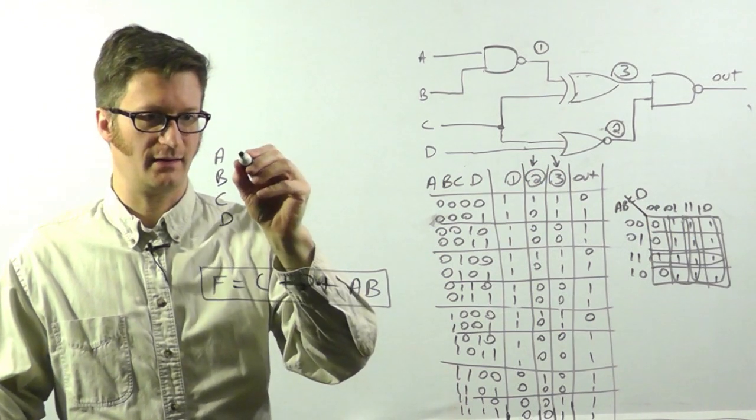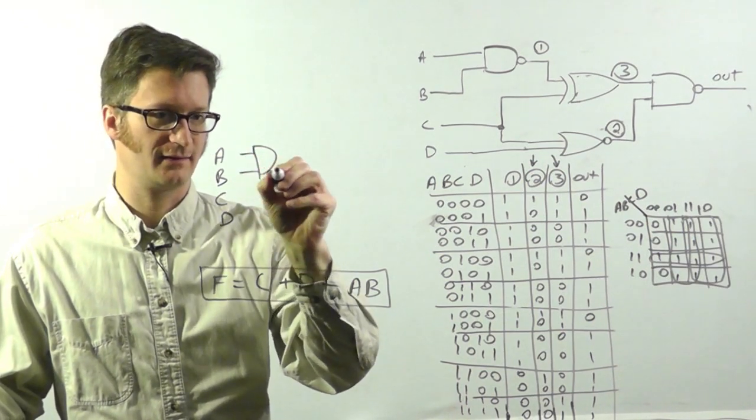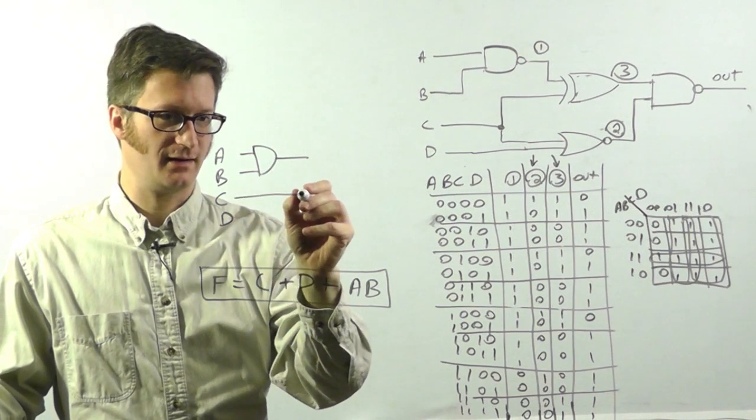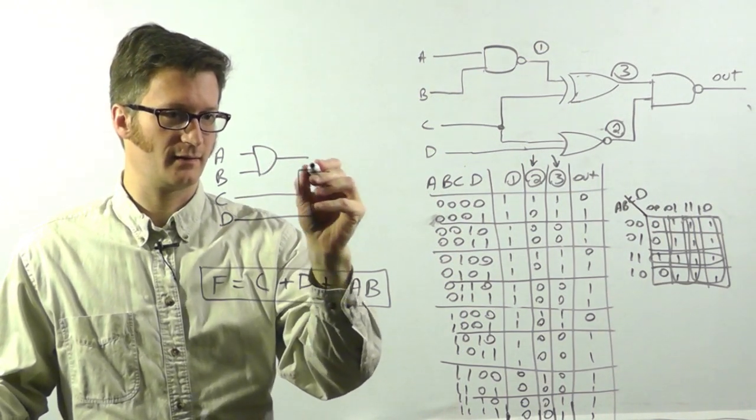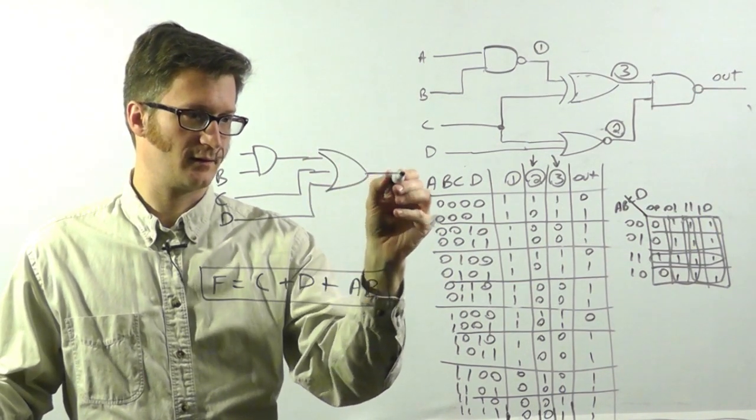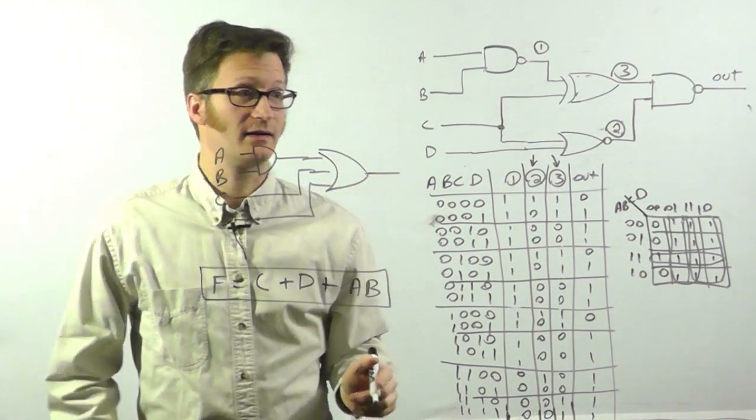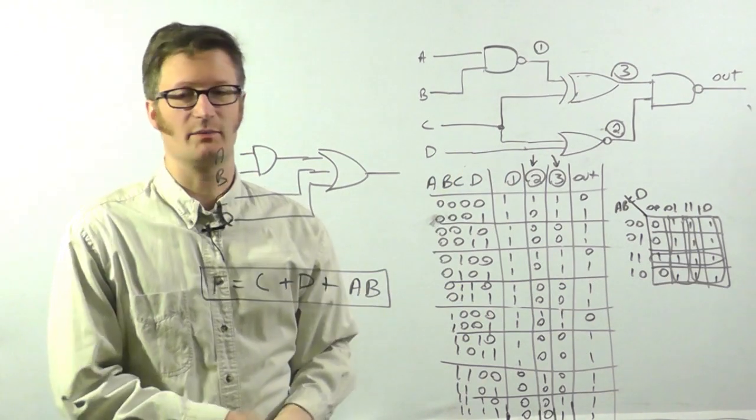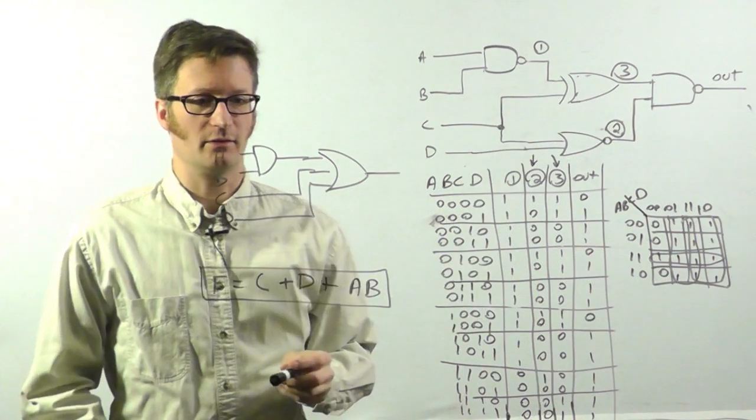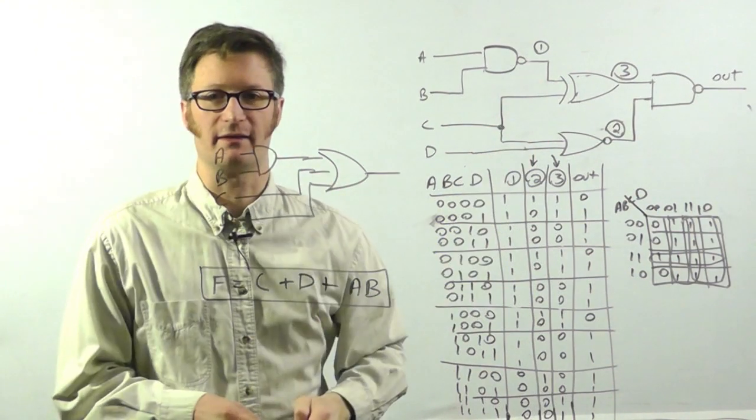And I need an AND gate. And then I need a three input OR gate. And that is the simplified version that performs the same function as this one, only it'll do it faster because there's fewer gate delays.